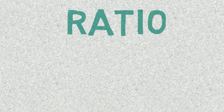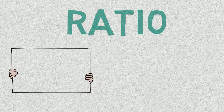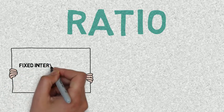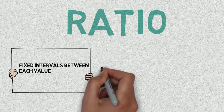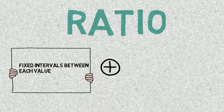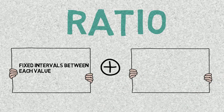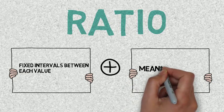It brings us on to the final one, which is ratio level data. Ratio is quite easy to remember because it's basically interval level data, fixed intervals between each value. Plus, you've got to have the extra kind of rule that there must be some meaningful zero point with this data.